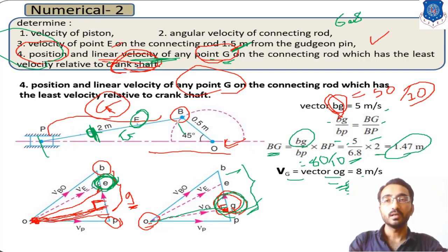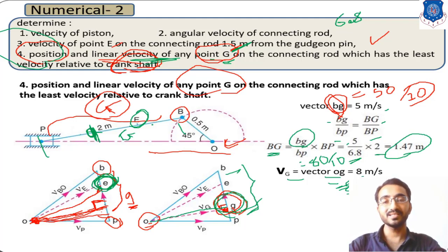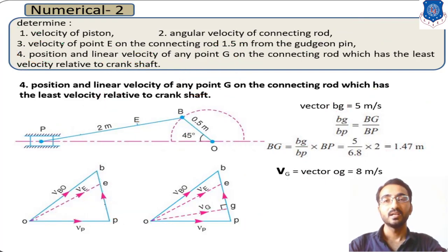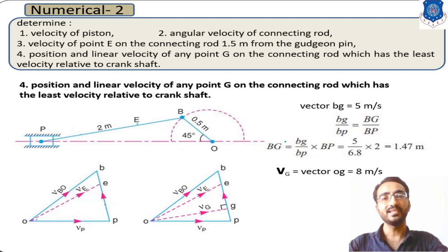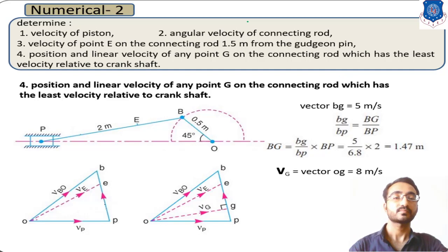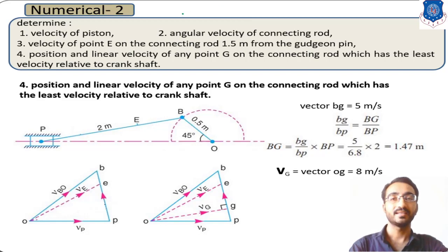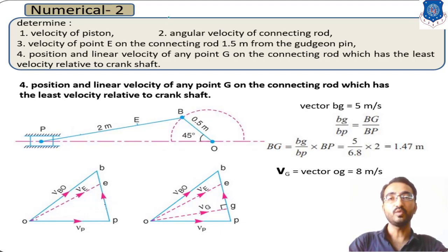In this way you can solve for the position and velocity of any point on the connecting rod. This is a simple method for solving numericals using the velocity analysis approach, and it is useful for any type of mechanism — not only four-bar chains or single slider mechanisms, but also complex mechanisms with multiple connecting rods or links. Thank you.